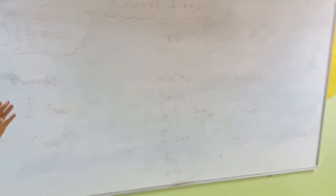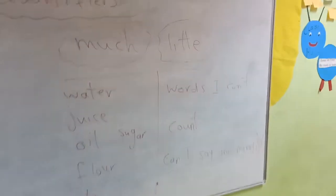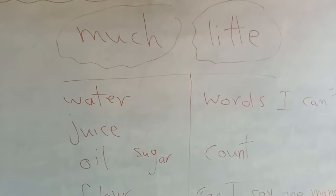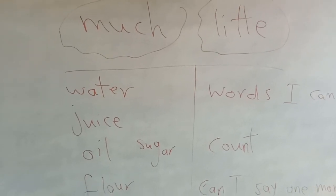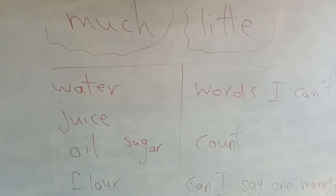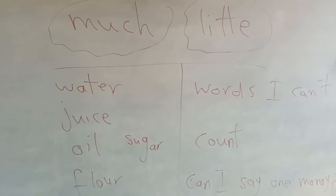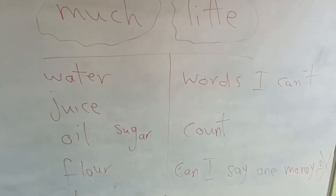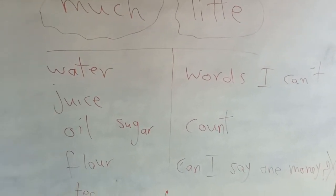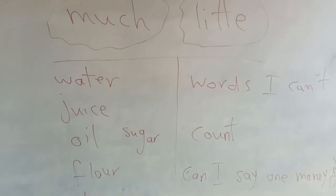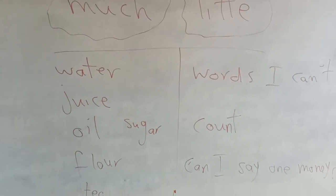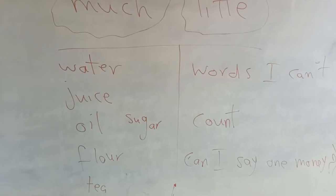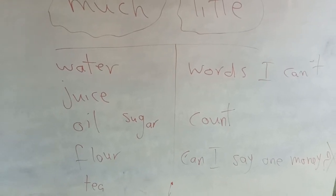Now let's move to much and little. Much means great in quantity; little means small in quantity. I use much and little for words I can't count — like water. Can you count water? If you fill a cup with water, can you count the water inside? No, you can't.